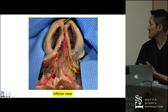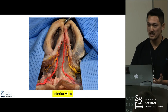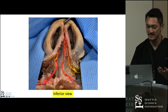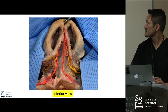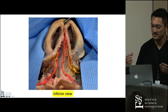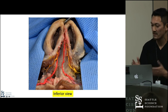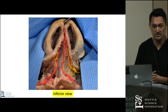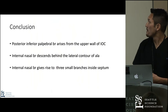This is a section picture showing the inferior view. The yellow structure is the internal nasal branch. This artery is the columellar artery. In all specimens, the columellar arteries were running medial to the internal nasal branches.